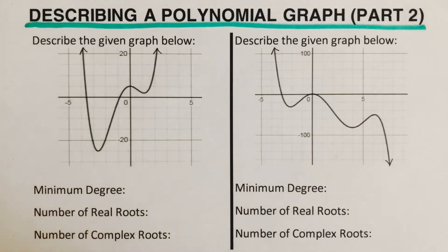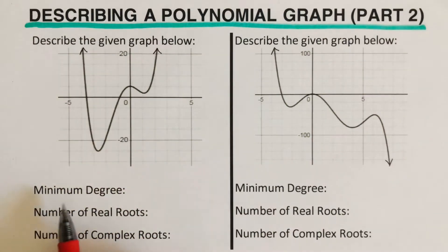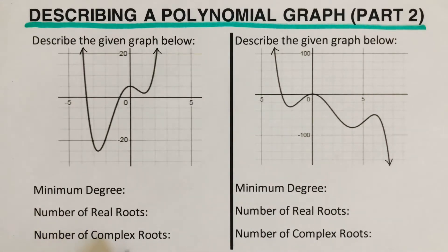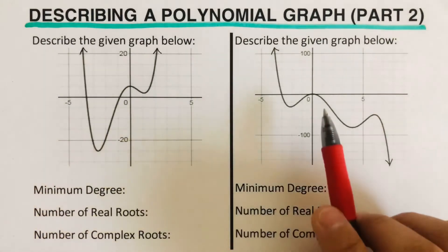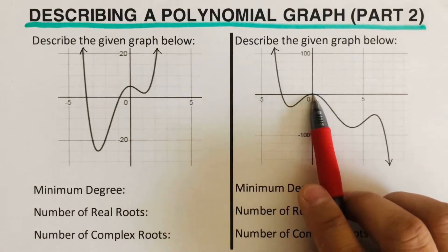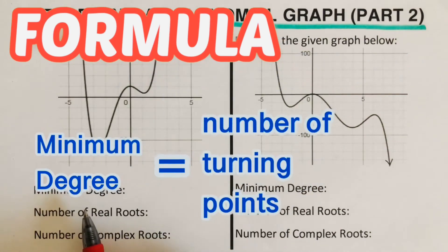So let's jump into this first example. We're given a graph and we need to determine the minimum degree, the number of real roots, and the number of complex roots. We use the word minimum because we don't consider multiplicity. The formula for minimum degree is the number of turning points plus one.